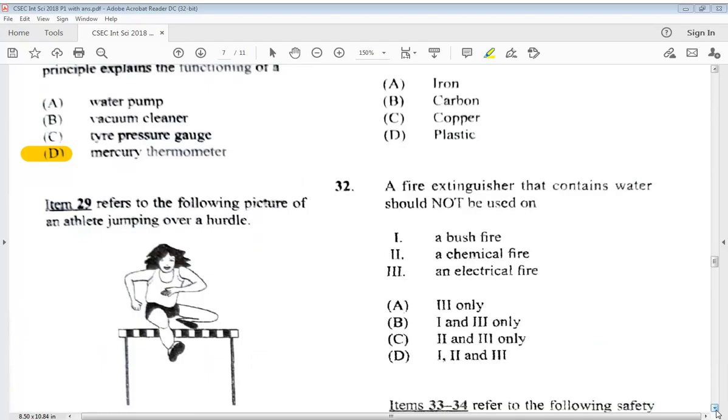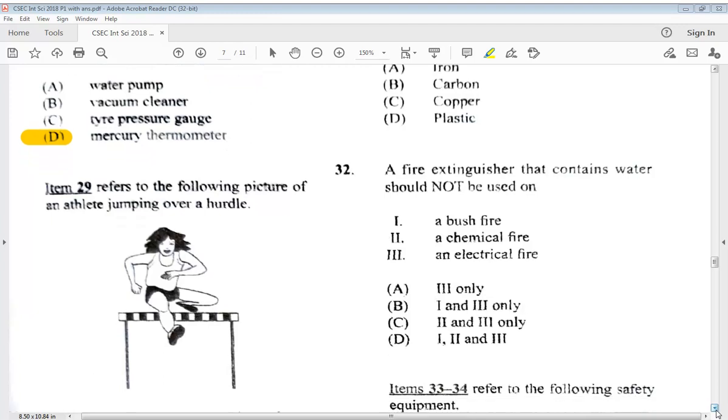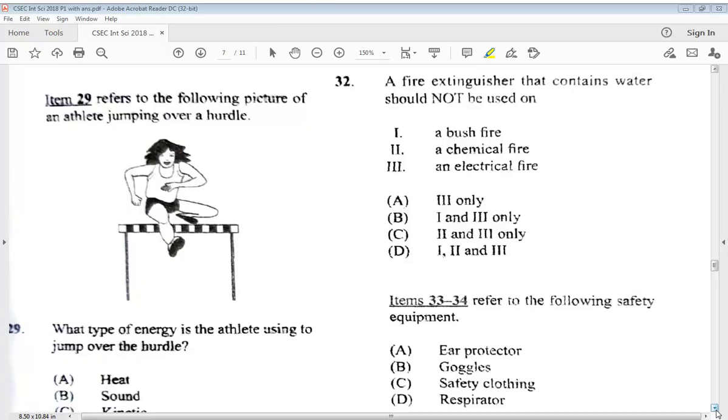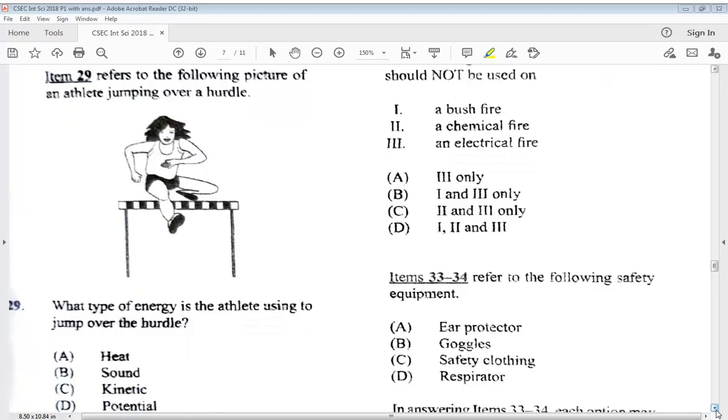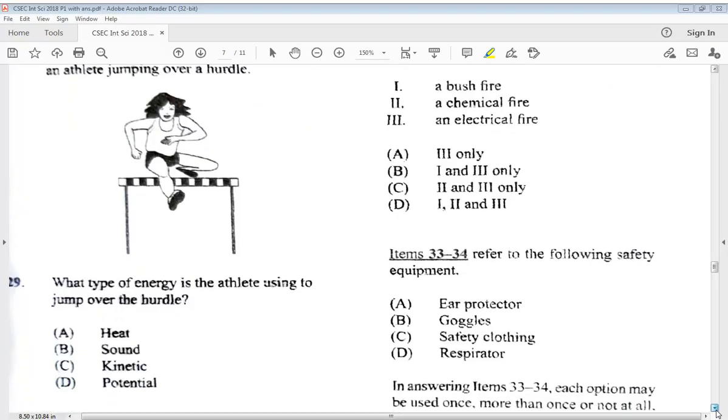Let's go to 29. It says item 29 refers to the following picture of an athlete jumping over a hurdle. A, heat, B, sound, C, kinetic, or D, potential. We know A and B would have been out, so we know our answer is C. That is, we know kinetic is associated with any type of movement.